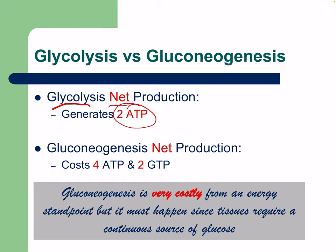During glycolysis the net production generates 2 ATP, while gluconeogenesis costs 4 ATP and 2 GTP — it actually requires energy. Gluconeogenesis is very costly from an energy standpoint, but it must happen since tissues require a continuous source of glucose. The body prioritizes the need for glucose over energy balance; in this state your body would signal you to rest — most gluconeogenesis occurs during fasted states or starvation.